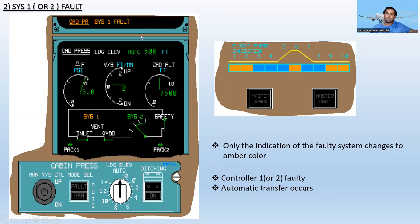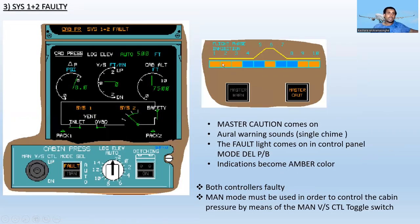The fault message shown is 'Cabin Pressure System One Fault.' The applicable flight phases are one, two, six, nine, and ten. The reason for this fault is Controller One or Two failure, and if this occurs, an automatic transfer will take place.